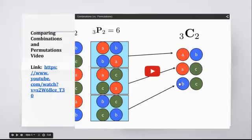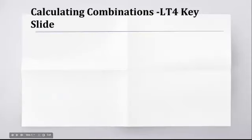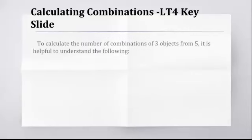Calculating combinations. This is the key slide. If there's one slide you want to copy out or print out or whatever, this is the key slide. So I just want to go through this carefully. To calculate the number of combinations of three objects from five, it is helpful to understand the following. So if you actually want to get that calculation, ten, without actually having to write them out, it's really helpful to understand the following.